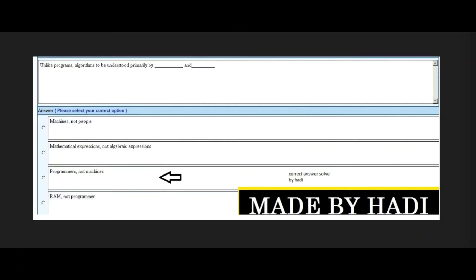Next MCQ: Unlike programs, algorithms are to be understood primarily by dash and dash. Options: machines not people, mathematical expressions not algebraic expressions, programmers not machines, or RAM not programmer. The right answer is the third option: programmers, not machines.